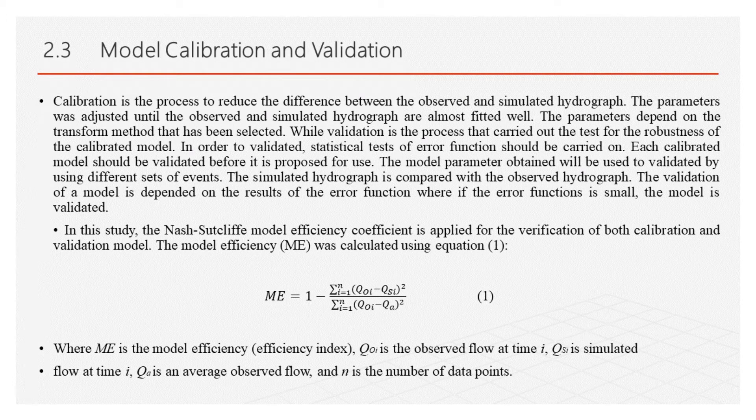Section 2.3 covers Model Calibration and Validation. Calibration is the process to reduce the difference between the observed and simulated hydrograph. The parameters are adjusted until the observed and simulated hydrographs are almost well-fitted. The parameters depend on the transform method that has been selected. Validation is the process that tests the robustness of the calibrated model. Statistical tests of error functions should be carried out, and each calibrated model should be validated before it is proposed for use.